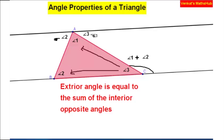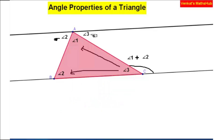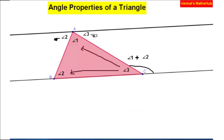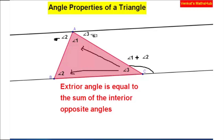So I have told you two properties. First: the sum of the interior angles of a triangle is always 180 degrees. Second: the exterior angle is equal to the sum of the interior opposite angles.